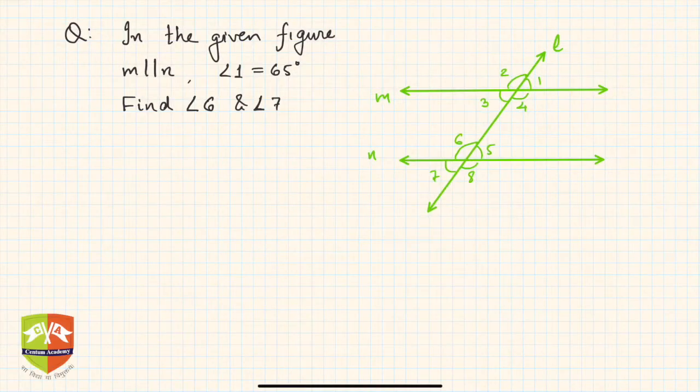Welcome to problem solving session on lines and angles. In this question, it's given that m is parallel to n and angle 1 is given to be equal to 65 degrees. So this is 65 degrees.